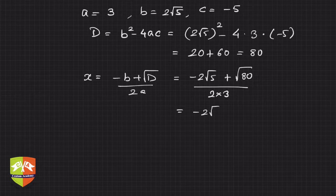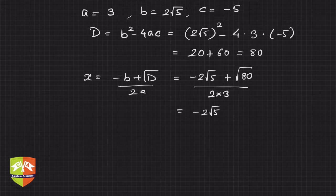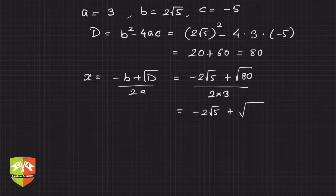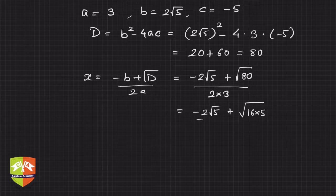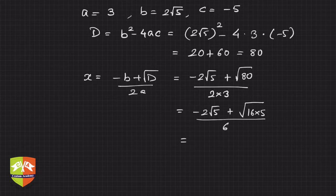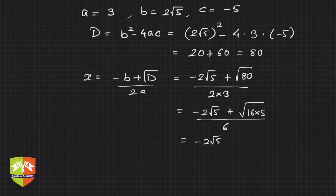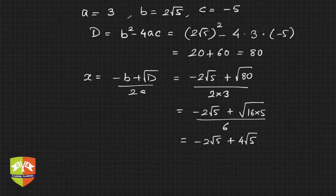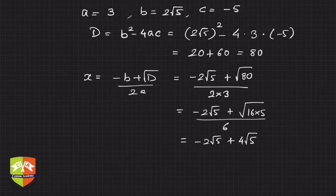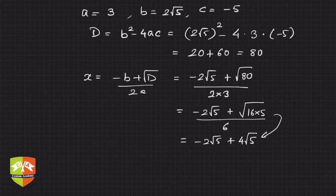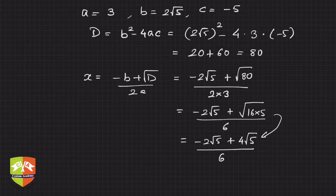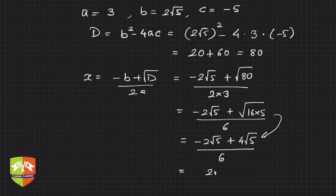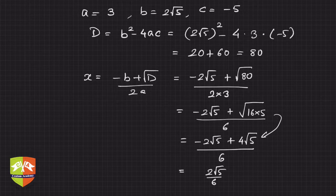This equals (-2√5 + √80)/6. We can solve √80. √80 is 16 × 5, divided by 6, which is -2√5 + 4√5, since 4² is 16, and 16 × 5 = 80.